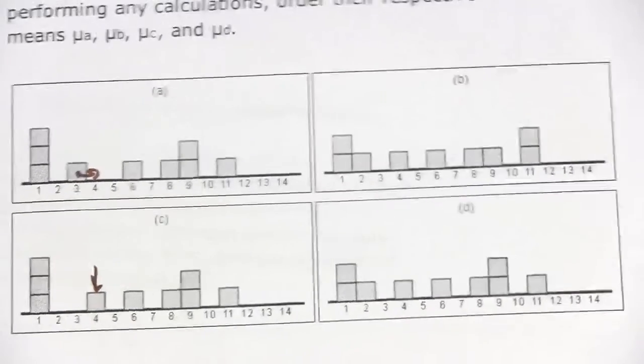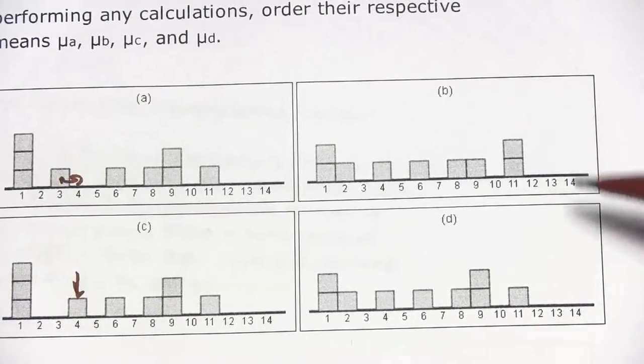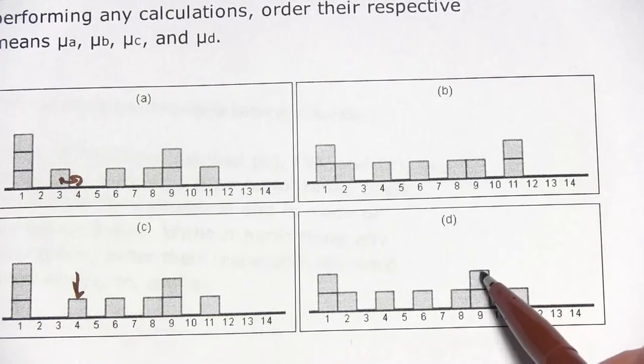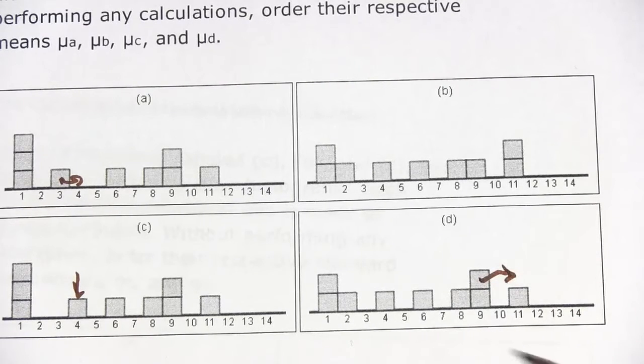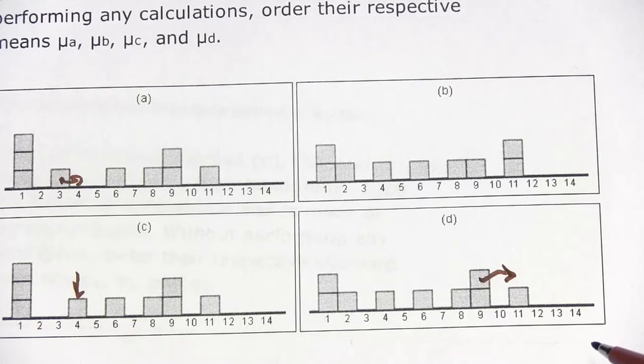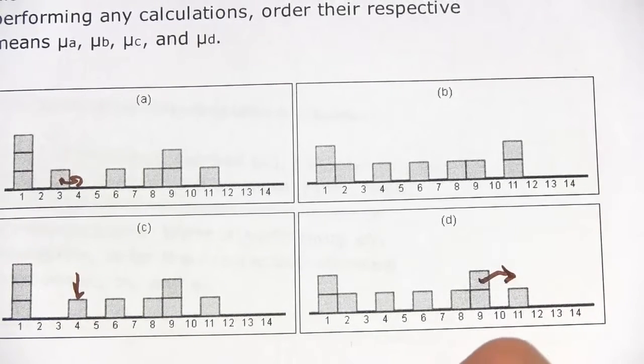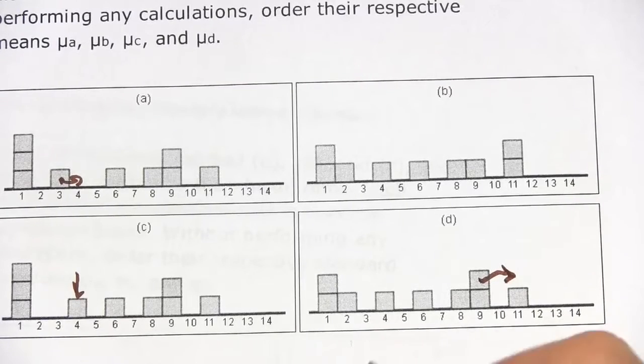Let's see what else we can say here. If we look at b and d, they're also almost identical. The only difference here is that it would be the same if we took this block and moved it up from a nine to an eleven. Everything else matches up, so that means μb, the mean of b, is greater than the mean of d.